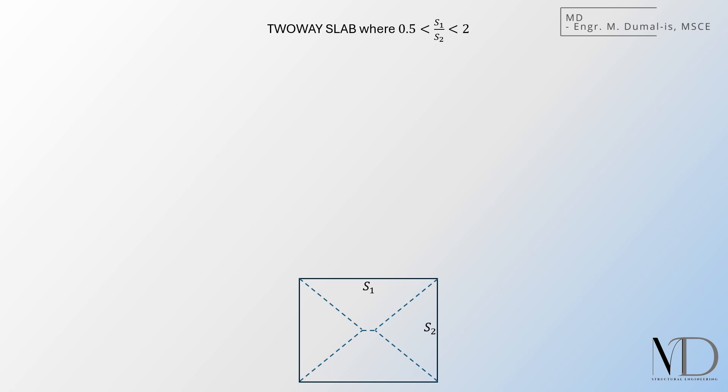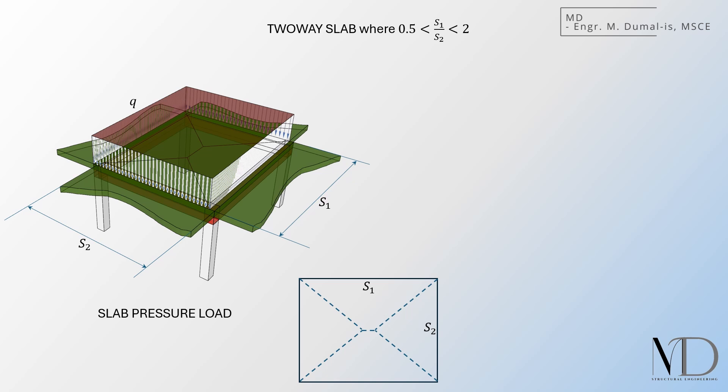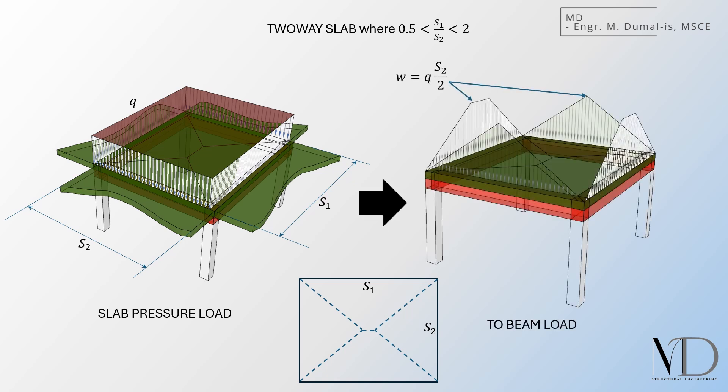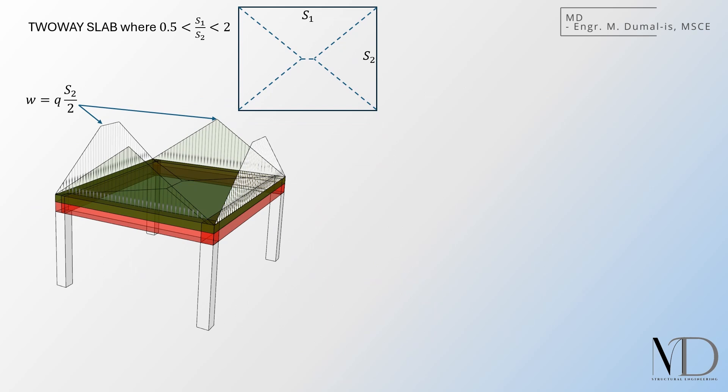But what if the slab is classified as two-way distribution? Now, the load isn't just passing straight down to a single pair of beams. It's being shared between multiple supports. And that's where things get tricky. Instead of a nice uniform rectangle, we end up with trapezoidal and triangular load distributions on the beams.